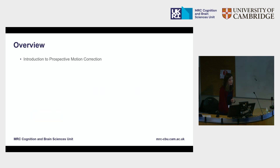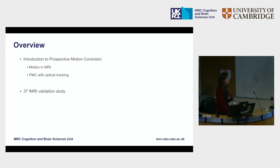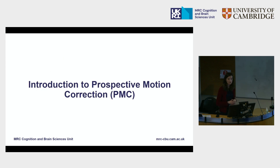I'll start off by giving a brief introduction to prospective motion correction, in particular the system that I've been using. We'll cover some of the impacts of MRI after head movement, prospective motion correction with optical tracking, then briefly mention a 7T fMRI validation study we ran a few years ago, and then I'll tell you where we are now after a very long gap where we weren't able to do much.